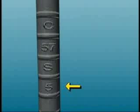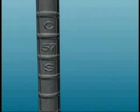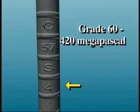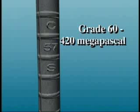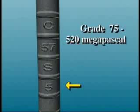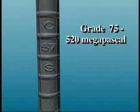The minimum yield designation is shown by either a number or a line. Grade 60 — 420 megapascals — rebar has either the number four or a single additional line through at least five deformation spaces adjacent to the continuous longitudinal rib. Grade 75, 520 megapascals, has the number five or two additional longitudinal lines.